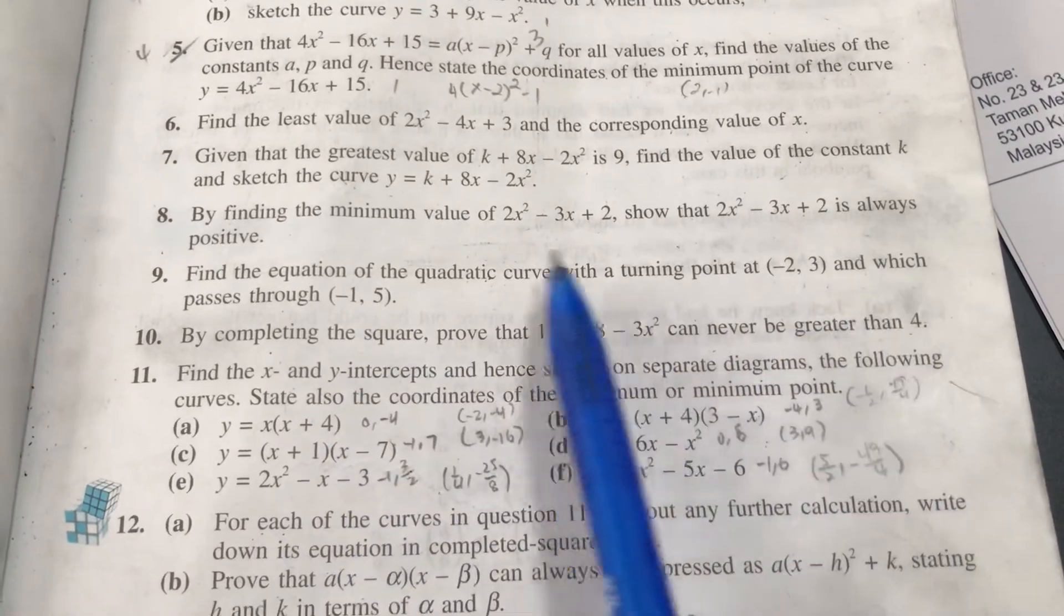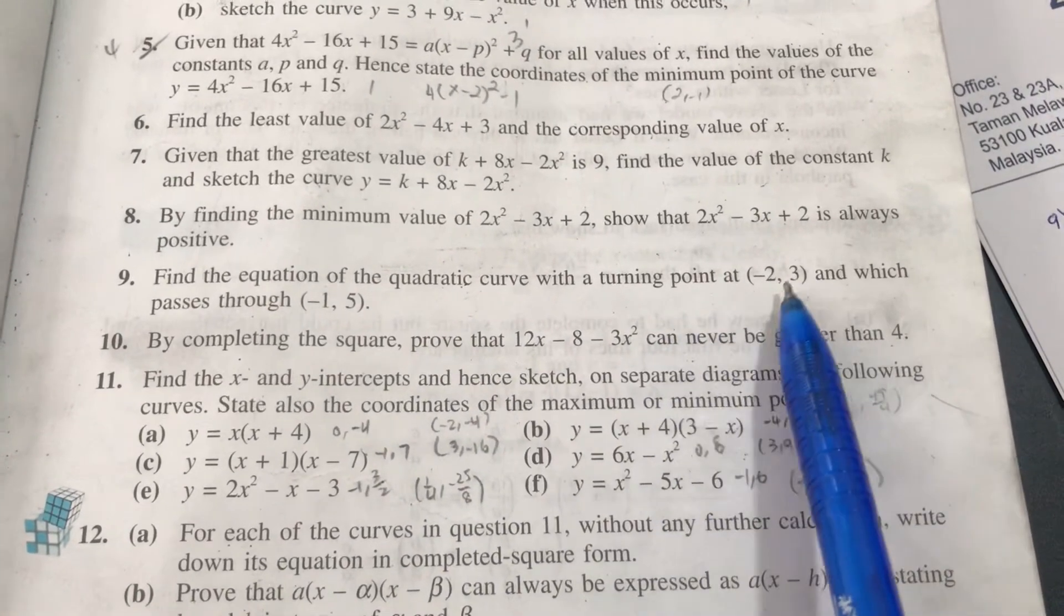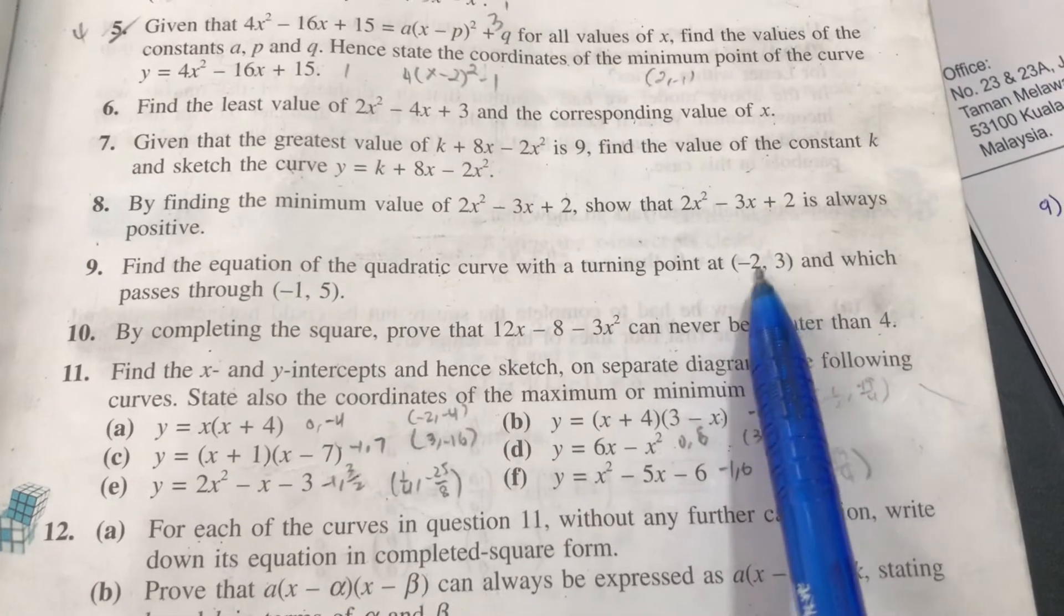Both lie on the quadratic curve themselves. It's just that because this is a turning point, it's a little special. This is our vertex.